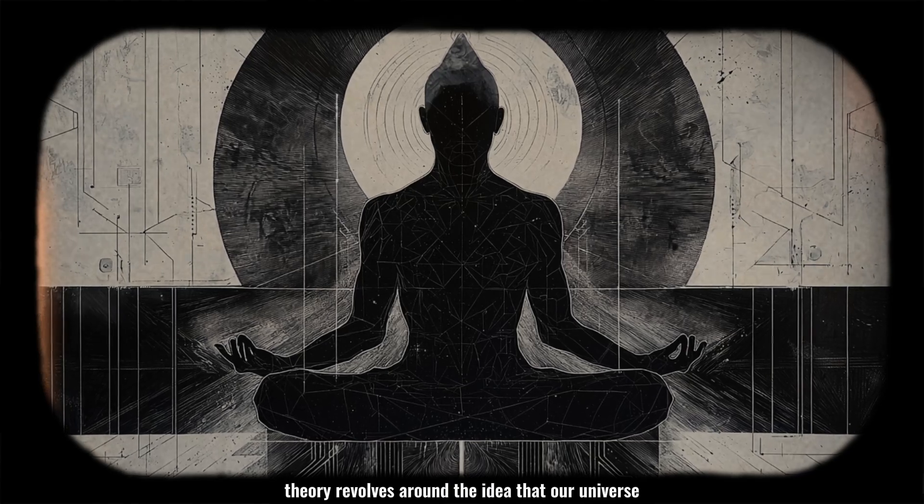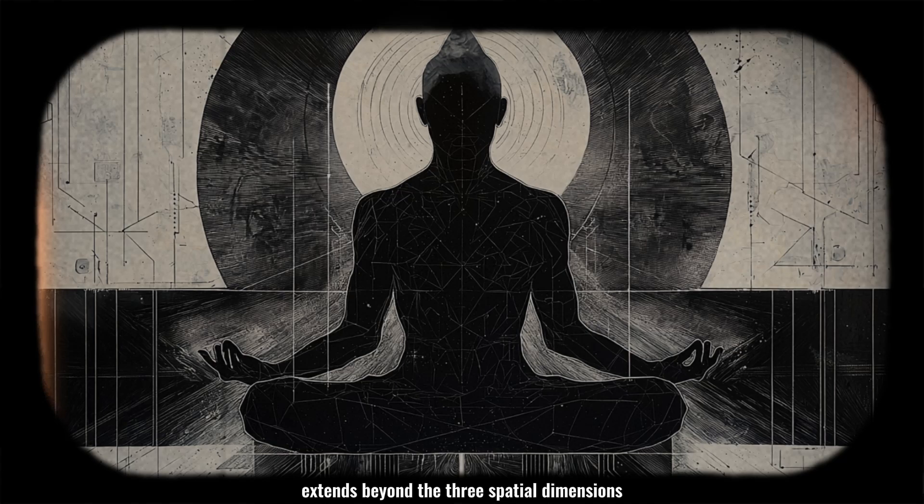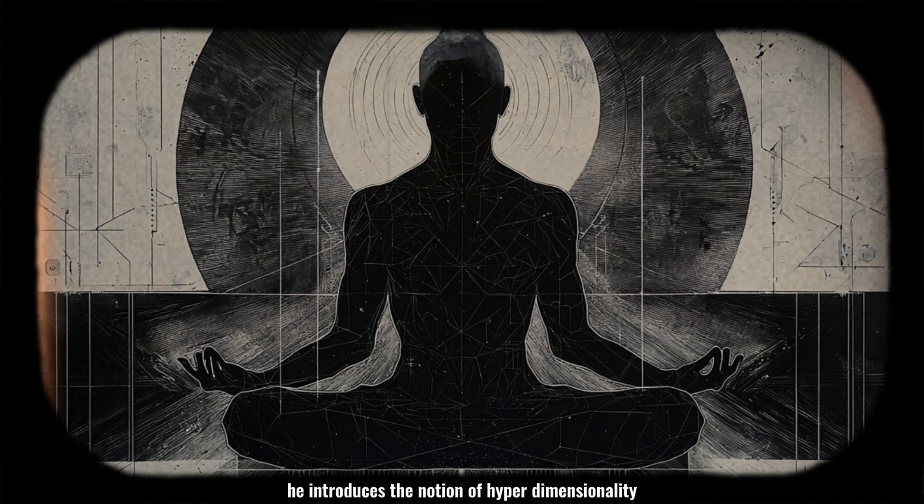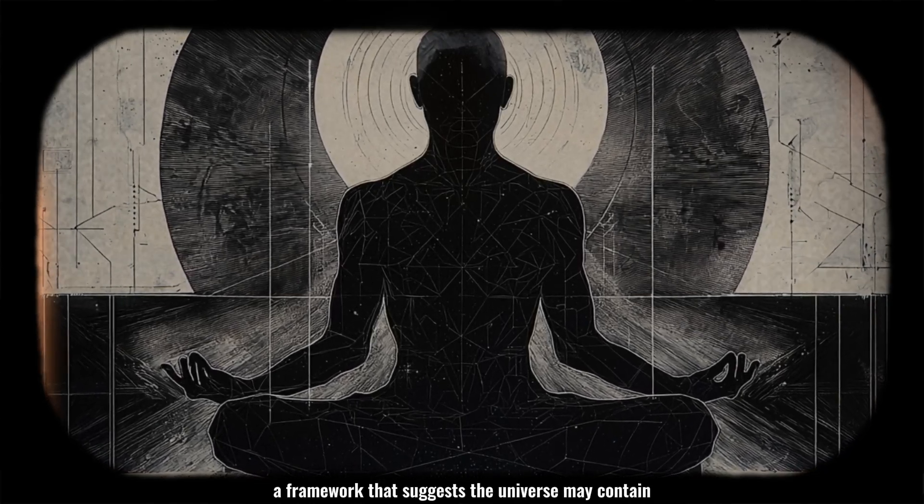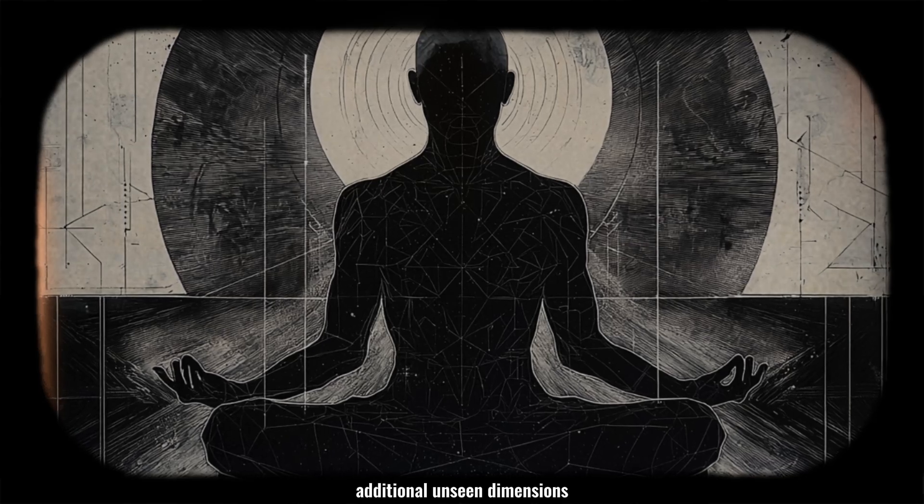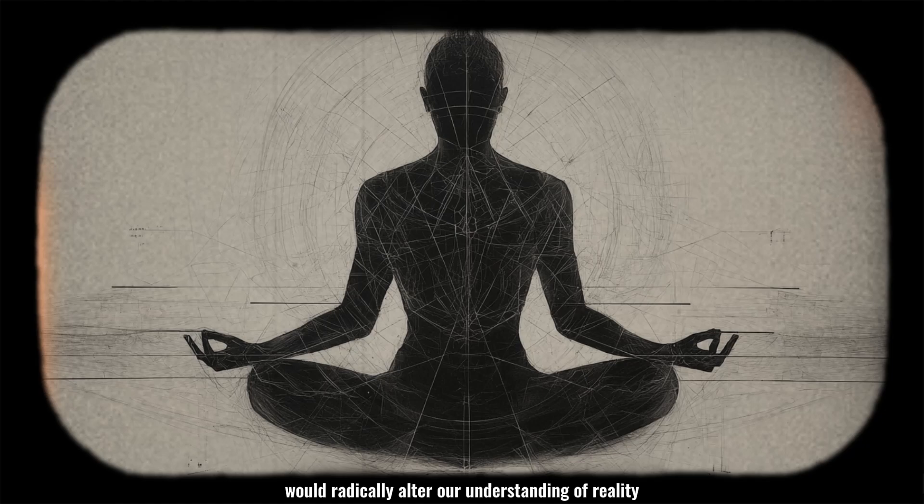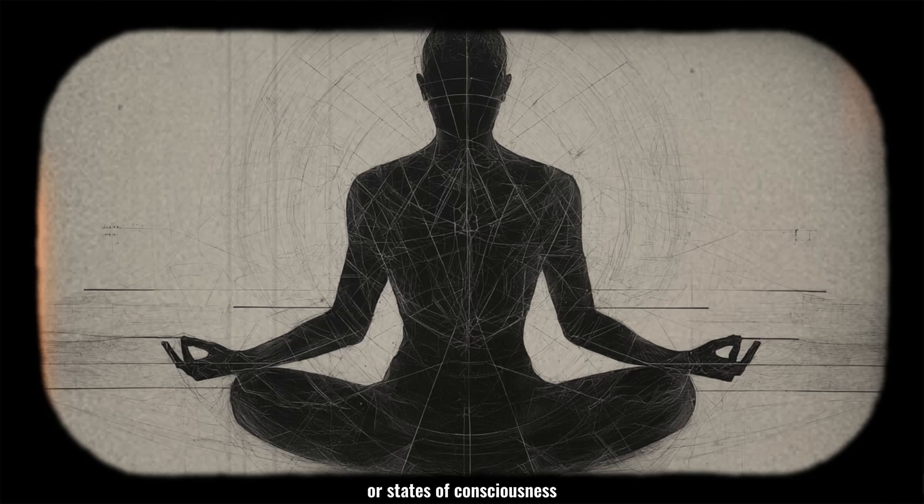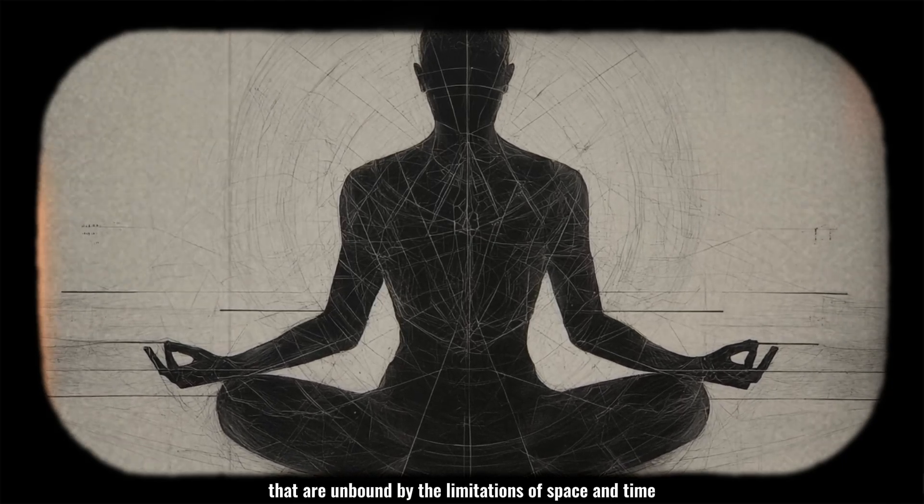Pryker's theory revolves around the idea that our universe extends beyond the three spatial dimensions and time that most people experience. He introduces the notion of hyperdimensionality, a framework suggesting the universe may contain additional unseen dimensions. These hidden dimensions, if they exist, would radically alter our understanding of reality and potentially accommodate entities or states of consciousness unbound by the limitations of space and time.